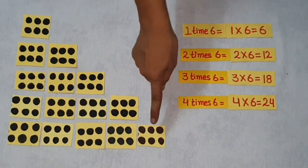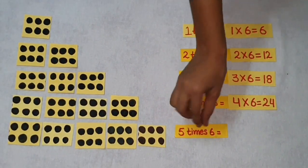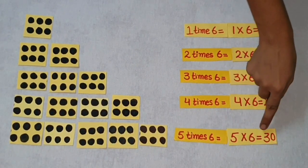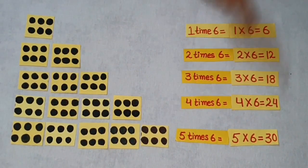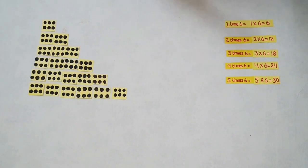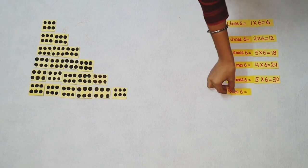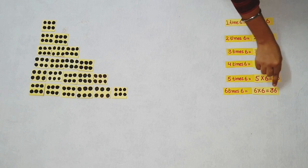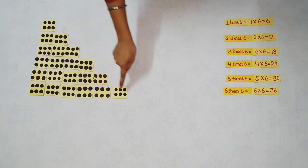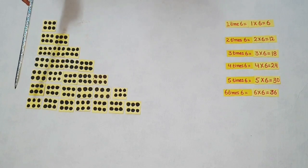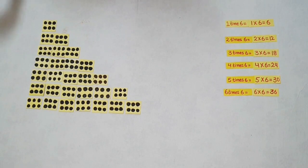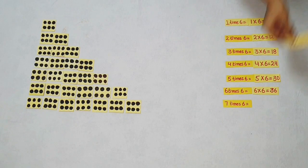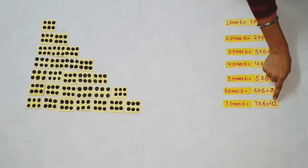There are five groups of 6 dots. 5 times 6 is equal to 5 into 6 is equal to 30 dots. There are six groups of 6 dots. 6 times 6 is equal to 6 into 6 is equal to 36 dots. Seven groups of 6 dots. 7 times 6 is equal to 7 into 6 is equal to 42.